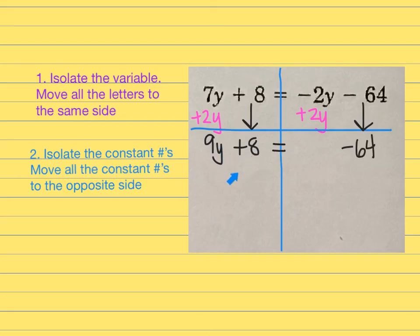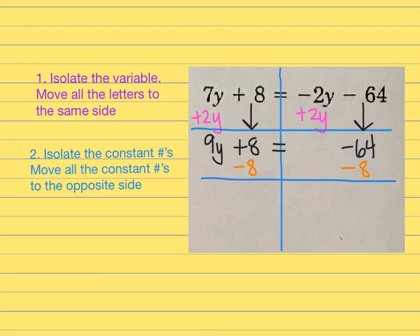I have a variable and a constant on the same side — I don't want that. So I eliminate the constant by taking away 8: minus 8 on both sides. On the left I still have 9Y, and 8 minus 8 cancels out. Then negative 64 minus 8 — when the signs are the same, you add the digits — giving negative 72.